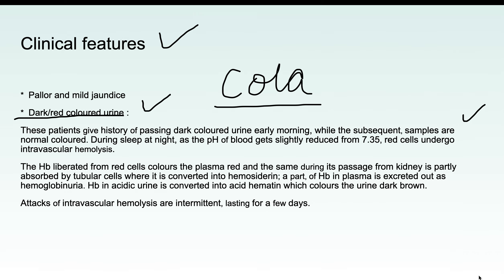The typical presentation is dark-colored urine in the morning with normal-colored urine subsequently. This occurs because during sleep at night, the pH of the body becomes slightly acidic, causing RBCs to undergo intravascular hemolysis. However, patients can also present with dark-colored urine throughout the day — not all patients have the classic early-morning pattern.